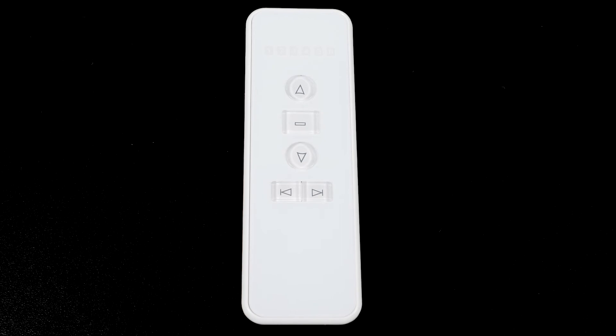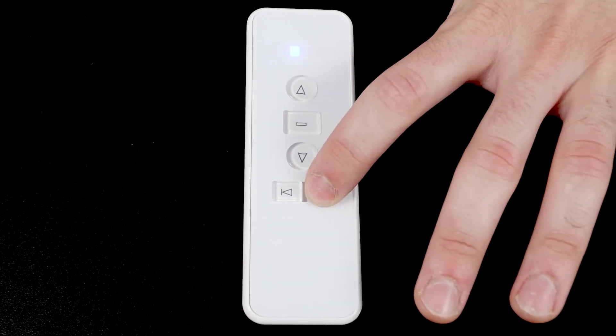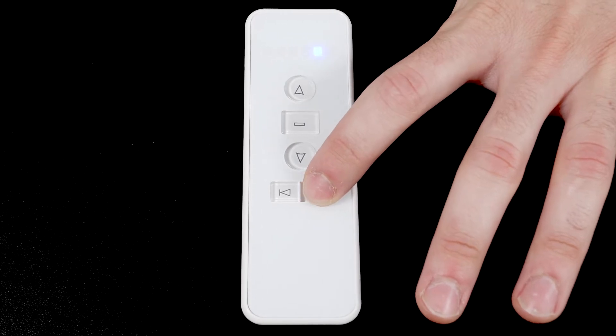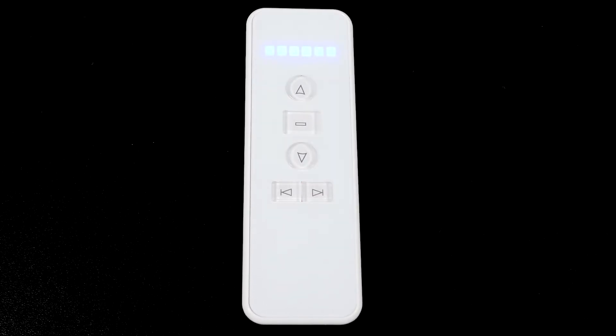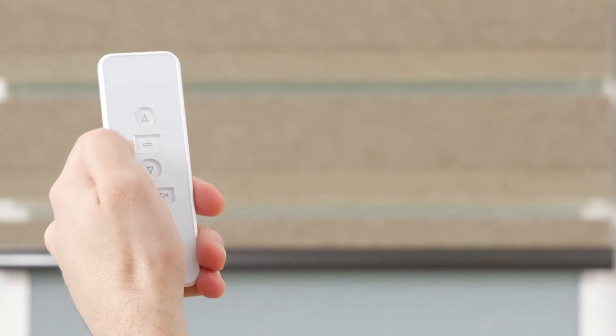Your remote can operate up to six individual channels. The lights at the top of the remote indicate which channel you're currently operating. If all six lights are illuminated, then the remote will operate all six channels at the same time. We highly recommend programming only one shade to each channel to avoid complications during programming and operation.